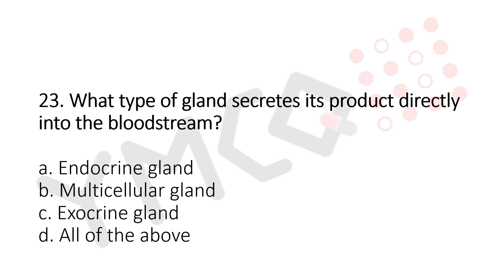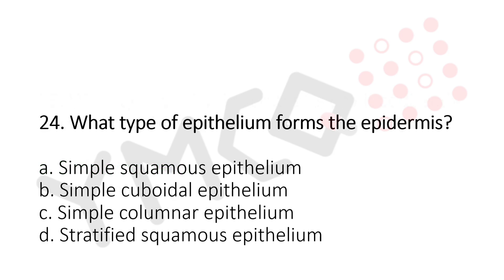Question 23: What type of gland secretes its product directly into the bloodstream? Option A: endocrine. Option B: multicellular gland. Option C: exocrine. Option D: all of the above. The answer is Option A, endocrine.